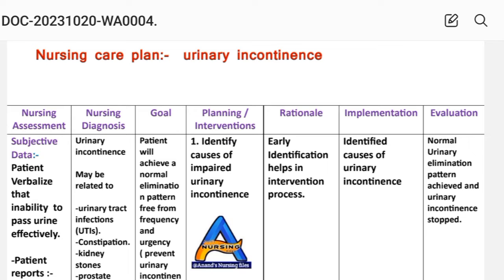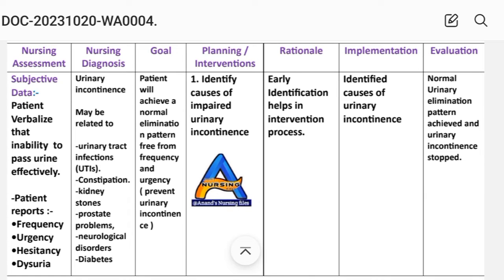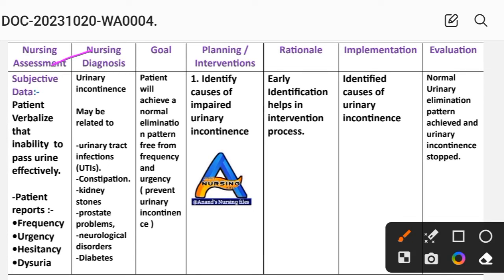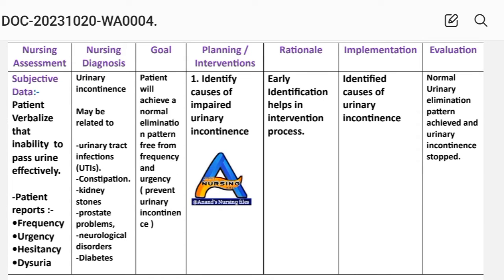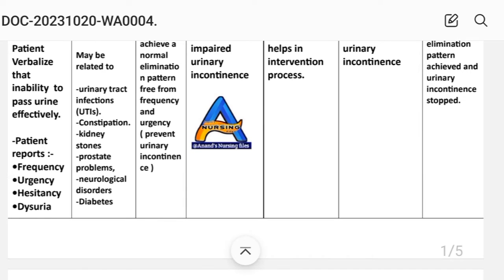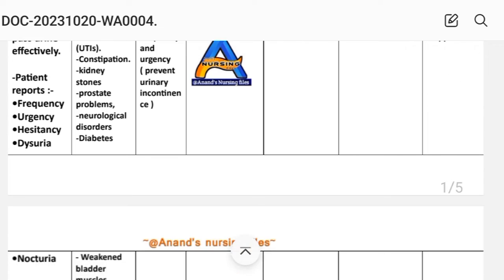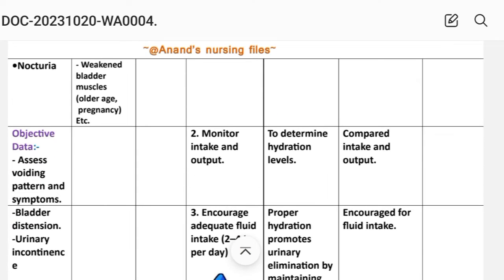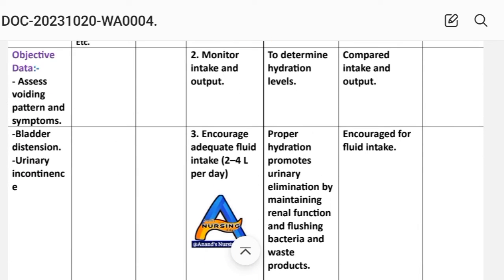First of all, nursing assessment. Nursing assessment includes subjective data, which is the data the patient verbalizes. The patient reports inability to pass urine effectively, and reports frequency, urgency, hesitancy, dysuria, and nocturia. These are the subjective data for nursing assessment.